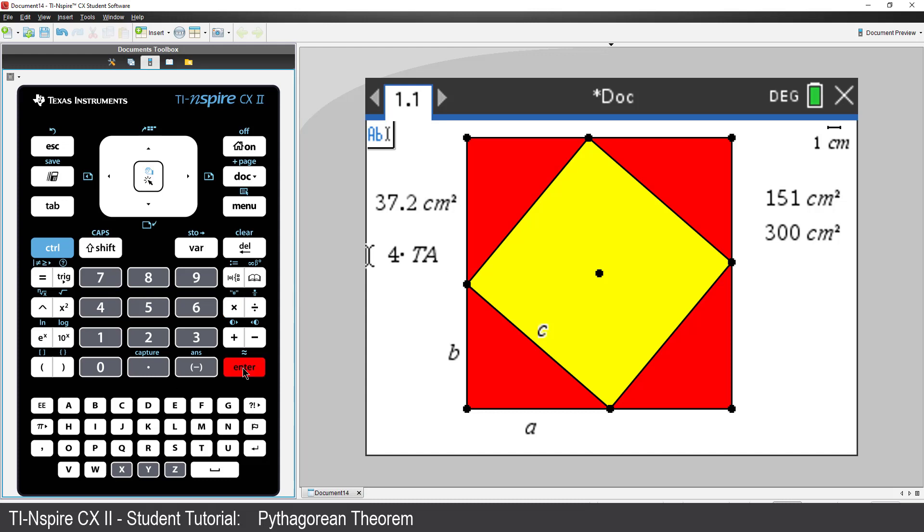Beneath the squares, I'll type the text LS for large square, minus SS for small square, and press Enter.